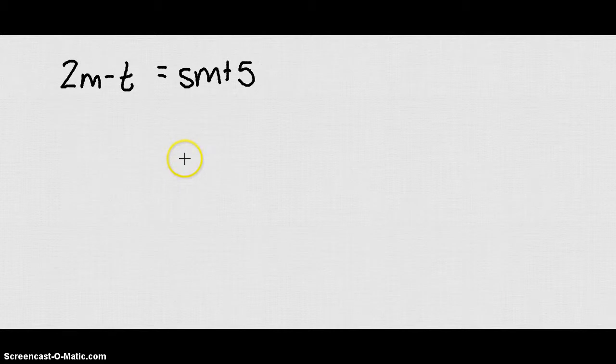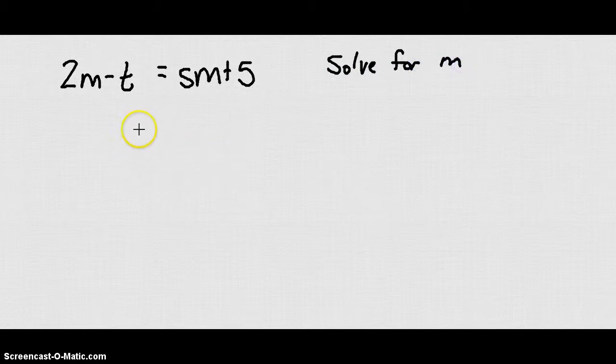Alright, so now we have a bit more complicated one. Let's say we want to solve this for m. We've got 2m minus t equals sm plus 5. Again, let's get the m terms on one side.